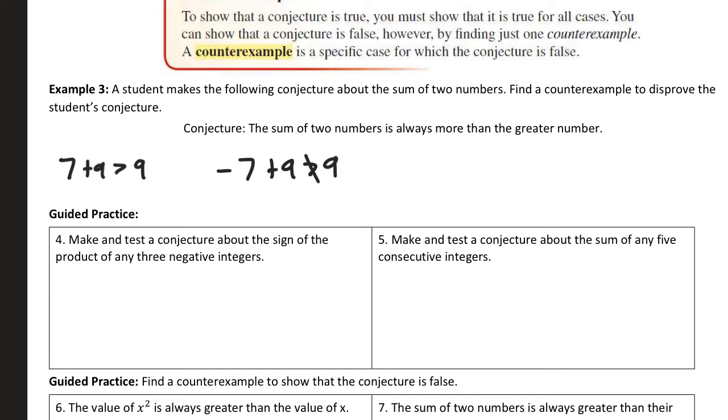Well, no, it's not. 2 is not greater than 9. So you could say sum of two numbers is always more than the greater number. You just got to prove that false by saying negative 7 and 9. That proves it false.